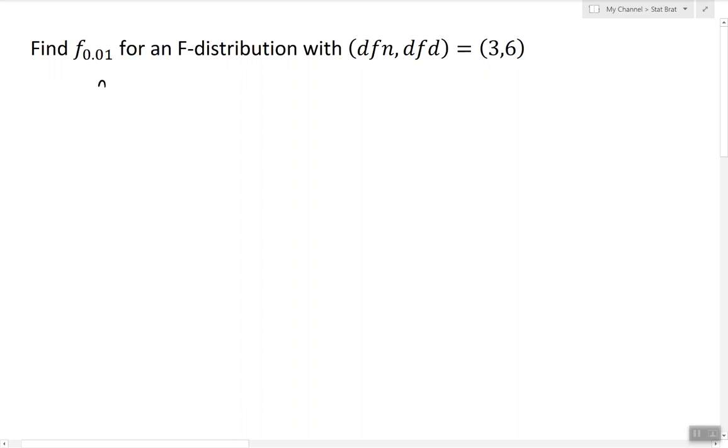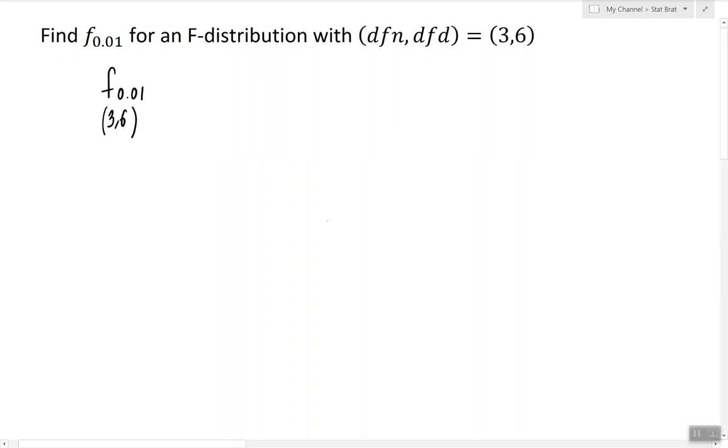In our case, we're looking for F.01 with 3 and 6 degrees of freedom. So, to answer this question, I'm going to look in the F-table for the column corresponding to the number 3.